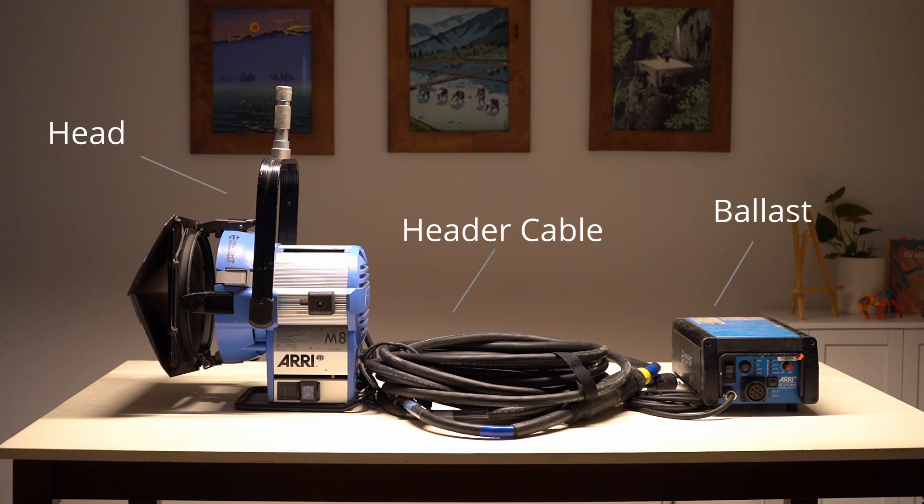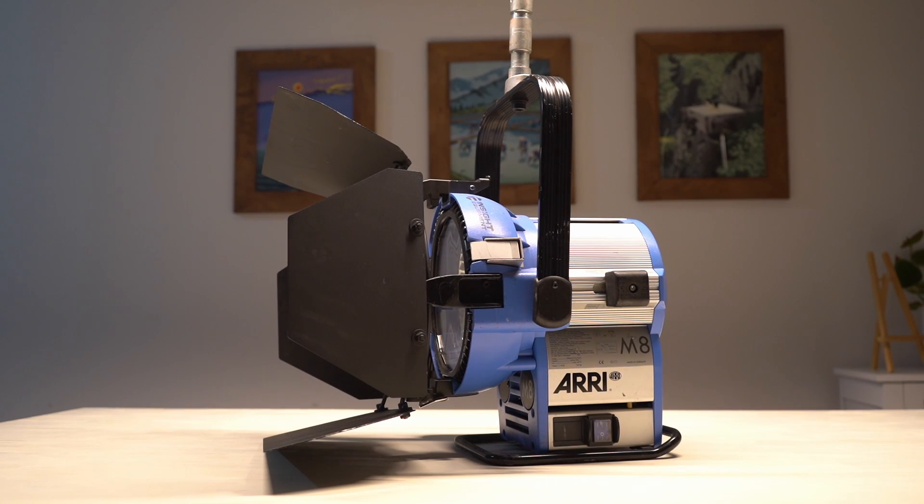The three main components to an HMI system include the head, the header cable, and the ballast. Let's start with the head.